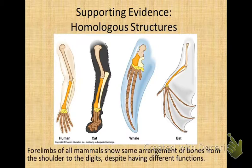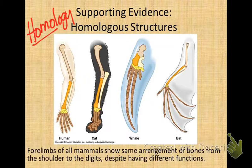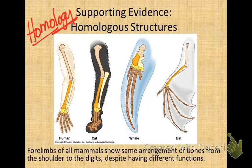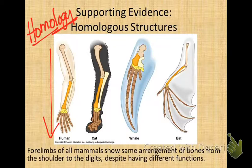Darwin cited several different types of evidence for what he called common ancestry — the idea that there were common ancestors and that gradually, through survival of the fittest, different adaptations branched off into a variety of different organisms in different environments. He studied something called homology. 'Homo' means same, so homology is the study of things that are the same, pointing to common ancestry. One example is homologous structures — skeletal and limb structures showing that the four limbs of all mammals have the same arrangement of bones from the shoulder down to the digits, despite having different functions.